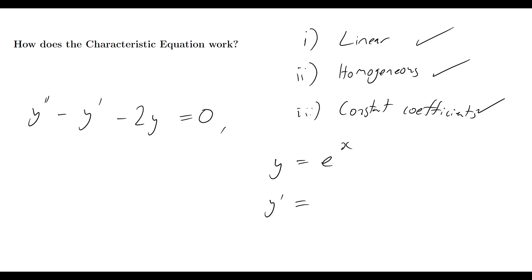So if I have y being equal to e to the lambda x, then I would say that y prime, that first derivative there, is going to simply be equal to lambda e to the lambda x. And then we would say that our second derivative is going to be equal to lambda squared e to the lambda x.